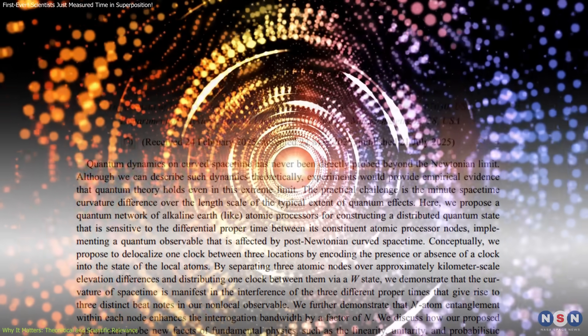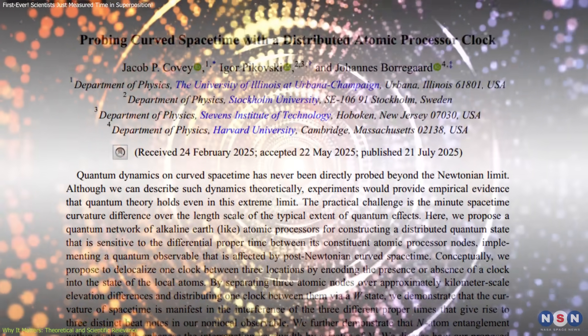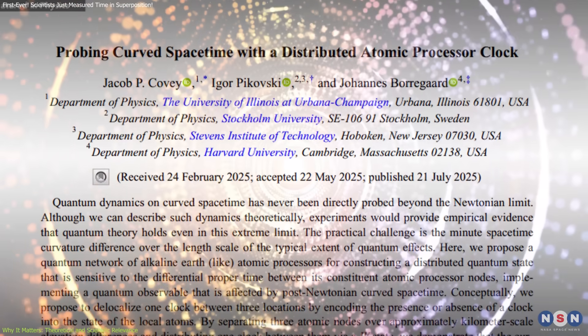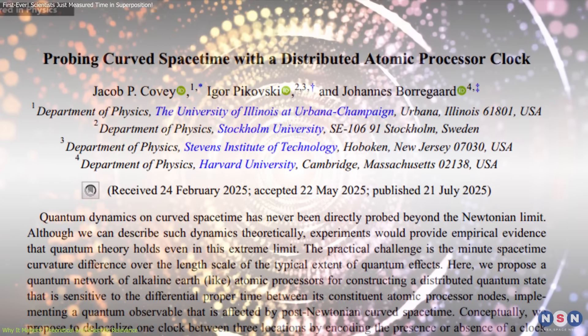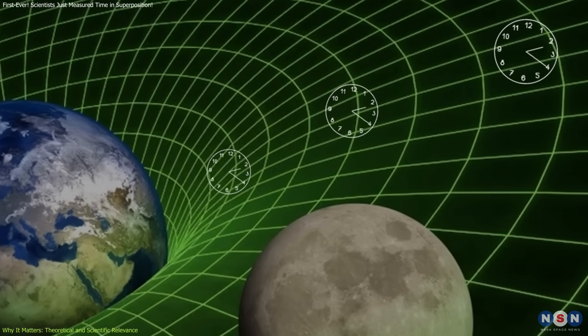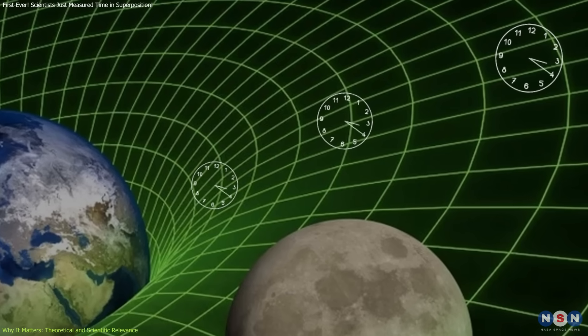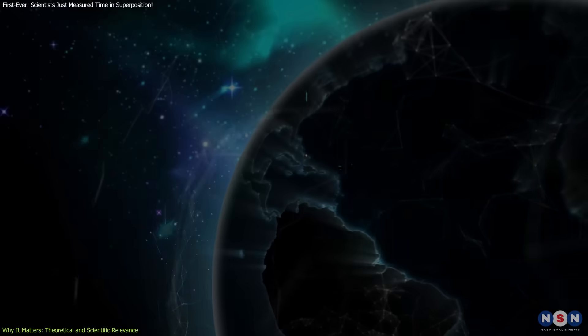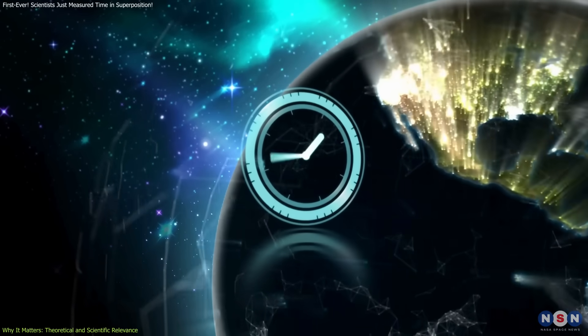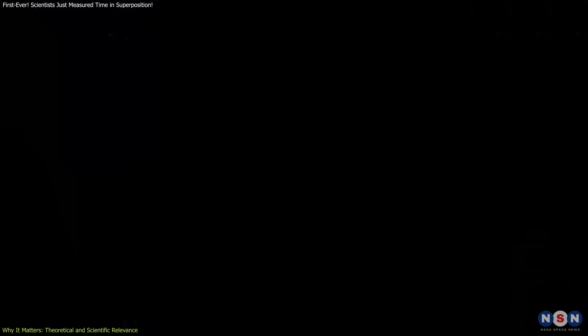The experiment proposed by Pekovsky and his team addresses this tension not by building a grand theory, but by asking a well-defined, measurable question: Can a superposition, in this case an atomic clock, remain coherent when its parts experience different gravitational time flows? This isn't just a technical exercise, it's a way to test the foundations of physics where they overlap.